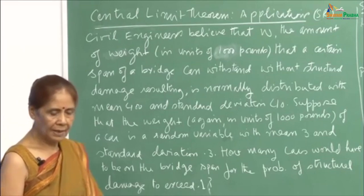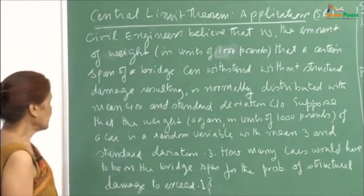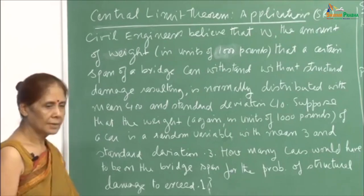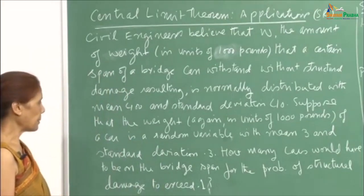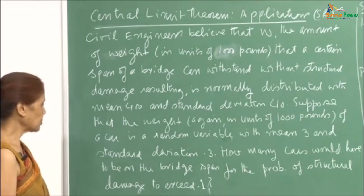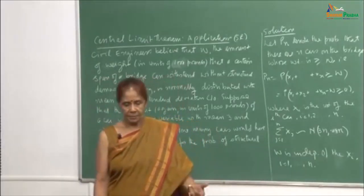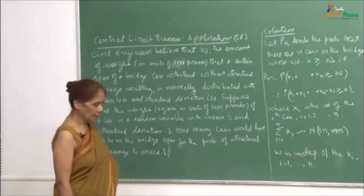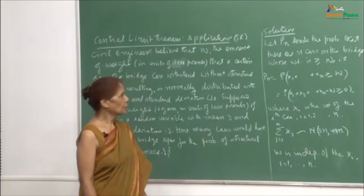Suppose that the weight, again in units of 1000 pounds, of a car is a random variable with mean 3 and standard deviation 0.3. The different cars will have different weights, so the weight of a car is treated as a random variable and its distribution is approximately normal with mean 3 and standard deviation 0.3. How many cars would have to be on the bridge span for the probability of structural damage to exceed 0.1?